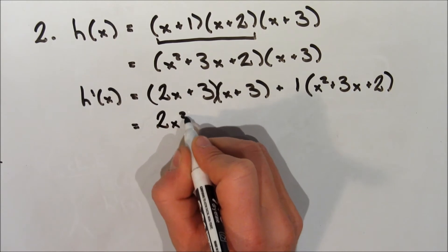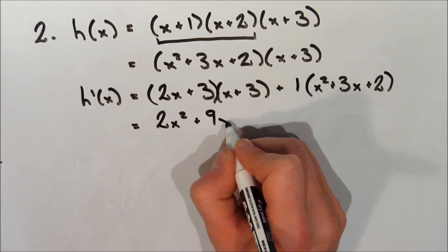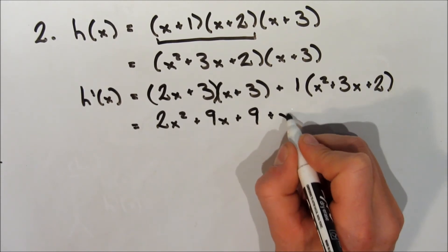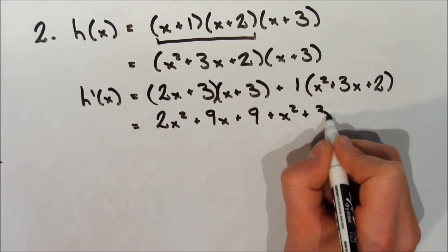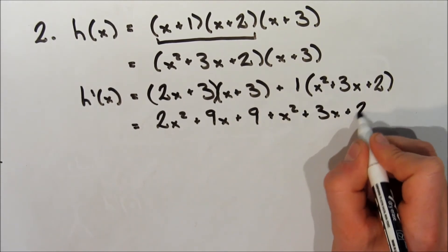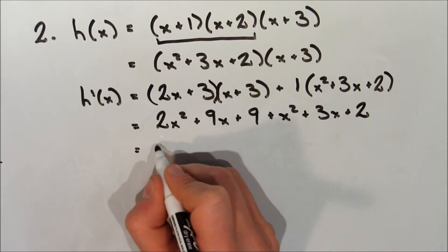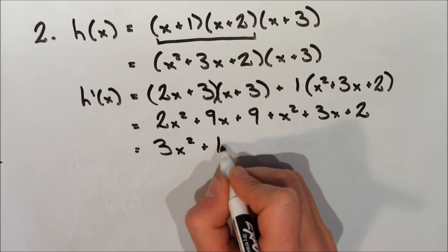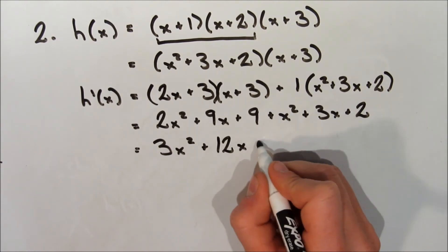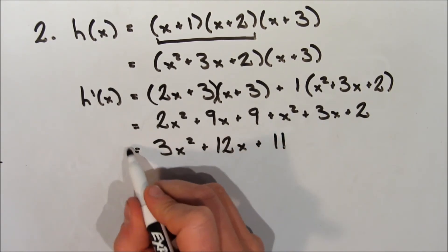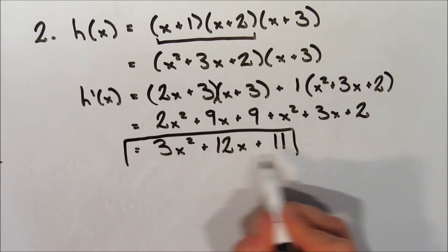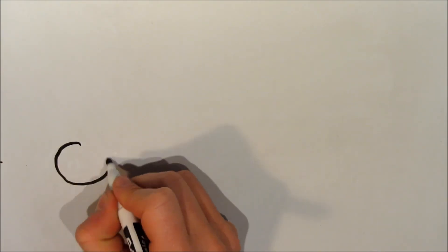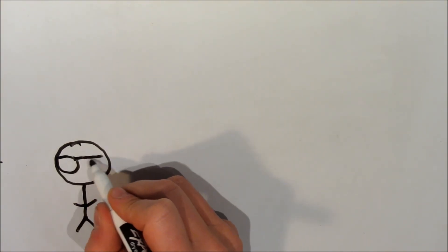Now we expand and collect the terms: 2x squared plus 9x plus 9, plus x squared plus 3x plus 2. Grouping these together, we get 3x squared plus 12x plus 11. And that's it — we've found the derivative.